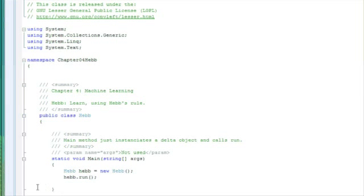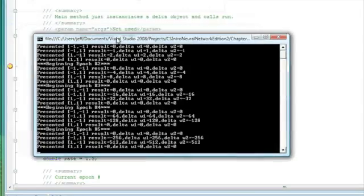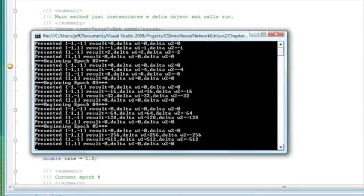Now, let's look at a C-sharp implementation of Hebb's Rule. We set the breakpoint and execute the program. We can now see the output from the program. We're going to look specifically at epochs four and five.